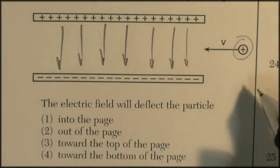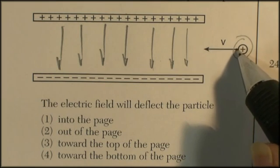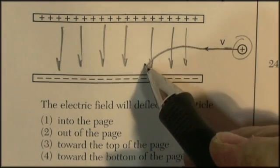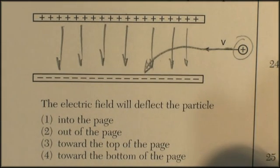The question is, the electric field would deflect the particle. Well, the positive particle will come in, it will be repelled from the positive and attracted towards the negative, and it would be deflected downwards.